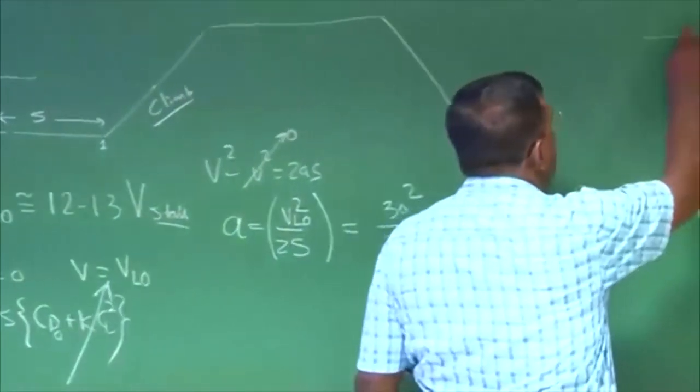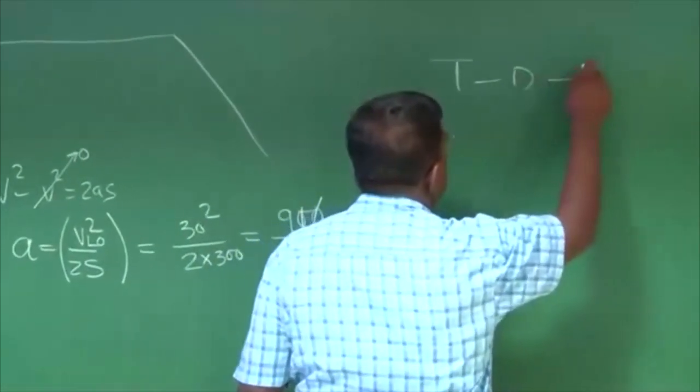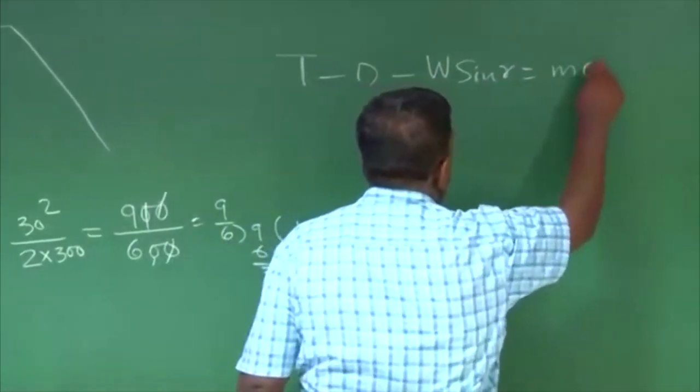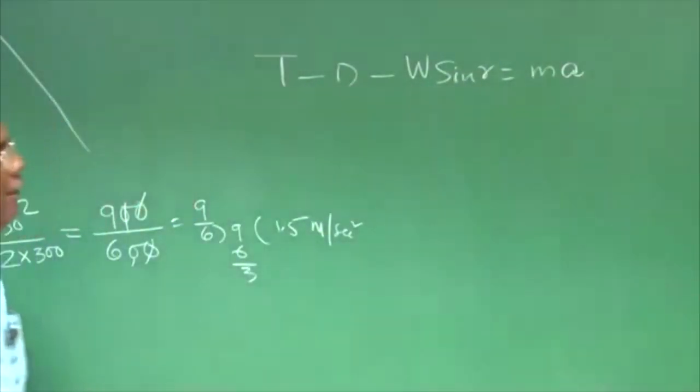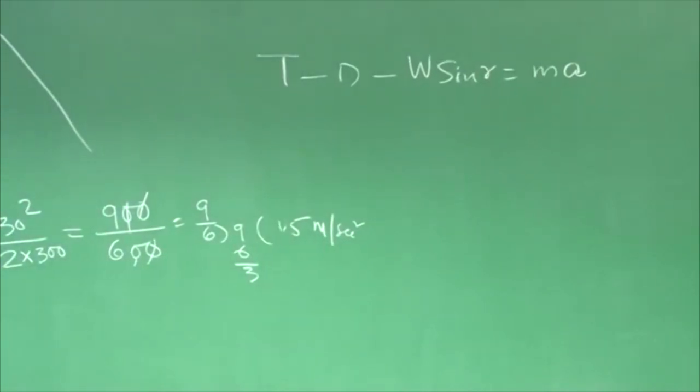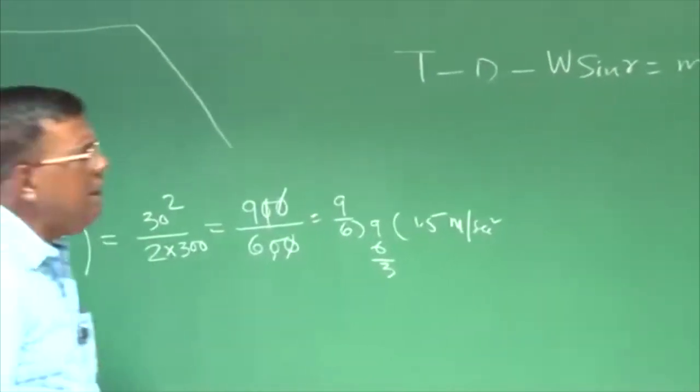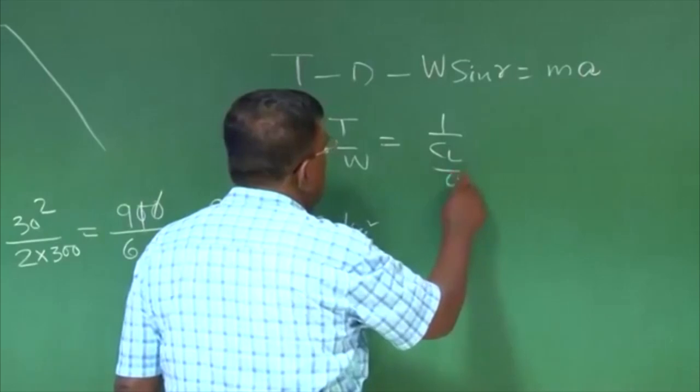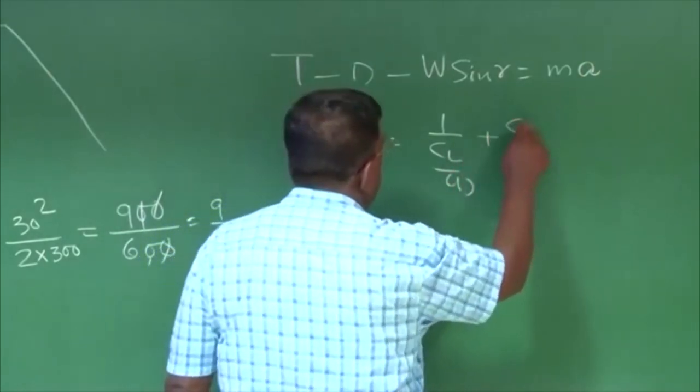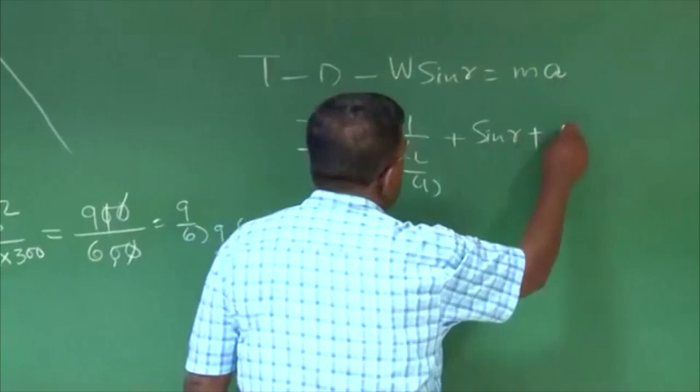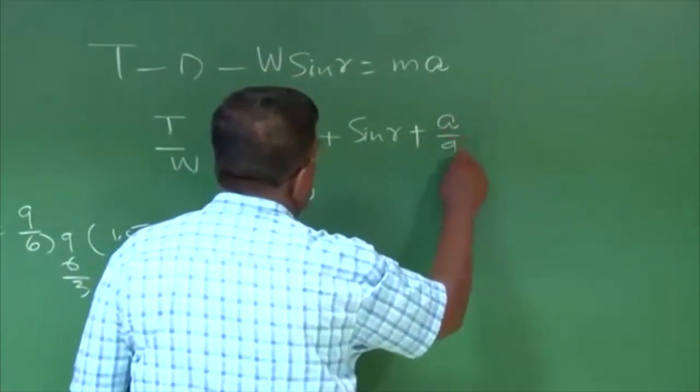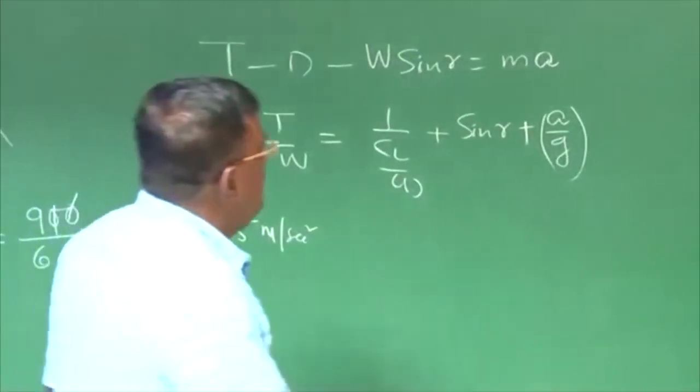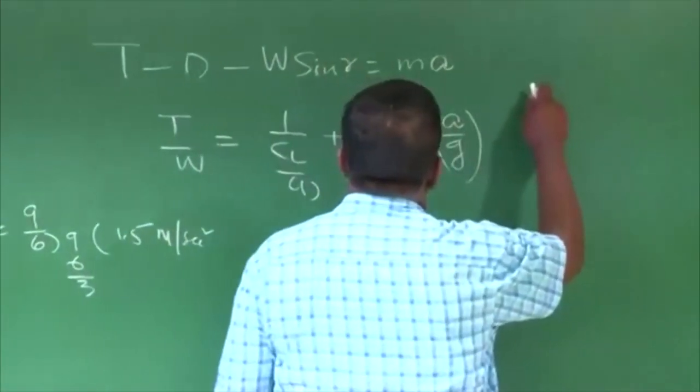For a climb, we know t minus d minus w sin gamma equal to m into a. For a steady climb, we assume that a is 0, but if you want to climb at an accelerated motion, you know t by w will be equal to roughly 1 by cl by cd plus sin gamma plus a by g, because m will be w by g.